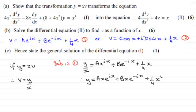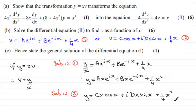And if I substituted in 2 and did much the same kind of thing, sub in equation 2, then we're going to have y over x equals what we've got here. And then if I multiply through by x, we end up with y equaling cx cos x plus i times dx sin x plus a quarter x squared. All right?